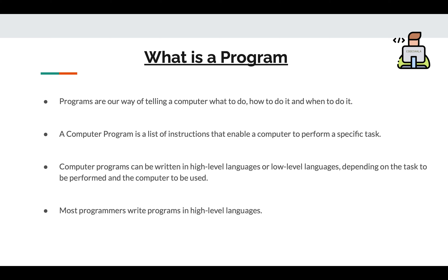Computer programs can be written in two types of languages. Firstly, high level languages, which include C, C++, Java, Kotlin, Python, and many others.